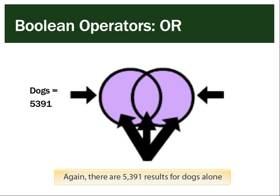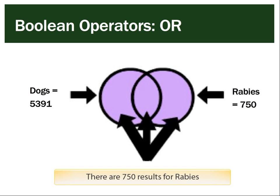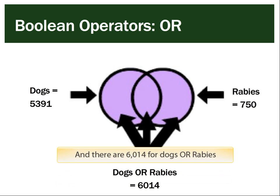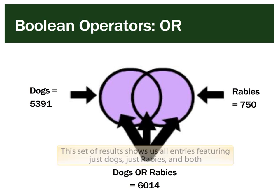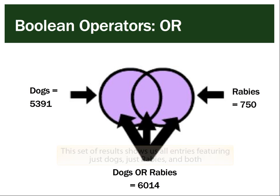There are 5,391 results for dogs alone, and 750 for rabies. There are 6,014 results for dogs OR rabies. This set of results shows us all entries featuring just dogs, just rabies, and both together.